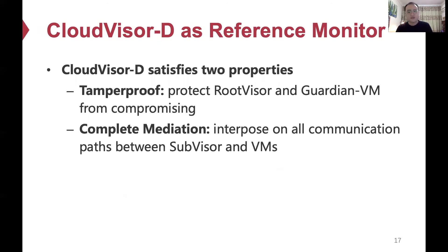To achieve the same level of security as nested virtualization, we regard CloudVisor-D as a reference monitor, which means it should satisfy two security properties. First, CloudVisor-D isolates the root visor and each Guardian VM, making their states unmodifiable by the corresponding guest virtual machine and the sub-visor. Second, CloudVisor-D — including the tiny root visor and the Guardian VM — intercepts all communication paths between the guest virtual machines and the sub-visor.